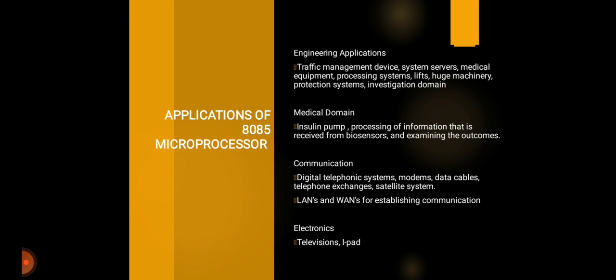The next application is in communication. In communication, the microprocessor is used in digital telephonic systems, modems, data cables, telephone exchanges, satellite systems, LAN, and WANs for establishing communication. In electronics, the microprocessor is used in televisions and iPads.